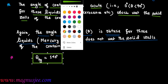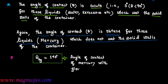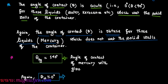The angle of contact of mercury with glass is theta_ag equal to 140°. Similarly, the angle of contact of water with glass is theta_w approximately equal to 0°.